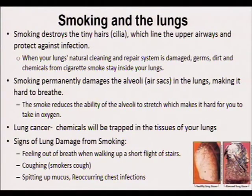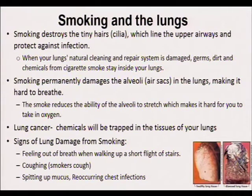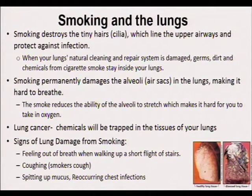We also have the issue of smoking. Smoking can destroy our lungs — you should be able to explain the danger of smoking to our health. Smoking destroys the cilia, the tiny hairs which line the upper airways and protect against infections. Smoking permanently damages air sacs in the lungs, making it hard to breathe. It also reduces the ability of the body to stretch, making it hard to inhale, and may lead to lung cancer. Signs of lung damage caused by smoking can be seen in the picture on the side.